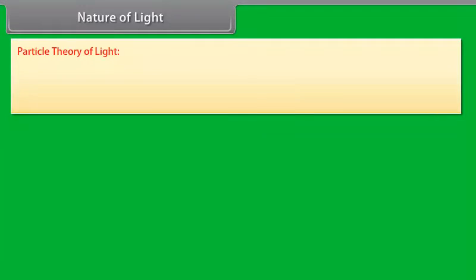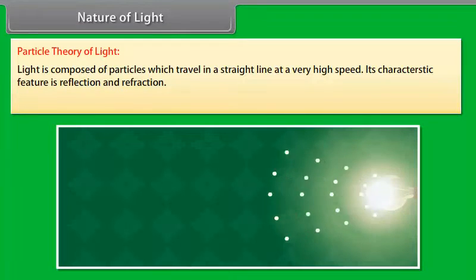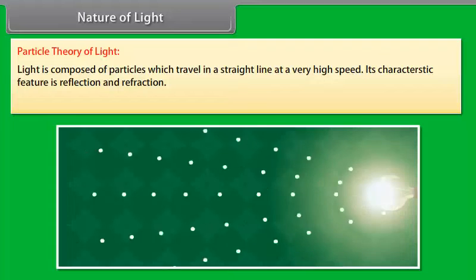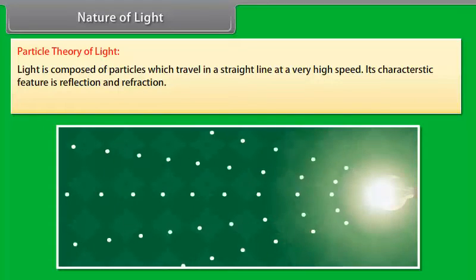Particle Theory of Light: Light is composed of particles which travel in a straight line at a very high speed. Its characteristic feature is reflection and refraction.